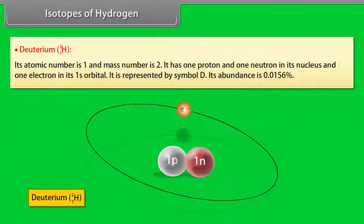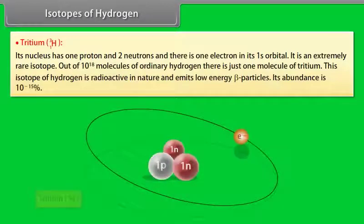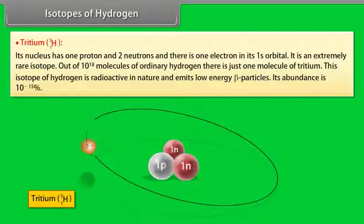Tritium: Its nucleus has one proton and two neutrons and there is one electron in its 1s orbital. It is an extremely rare isotope. Out of 10 to the power 18 molecules of ordinary hydrogen, there is just one molecule of tritium. This isotope of hydrogen is radioactive in nature and emits low-energy beta particles. Its abundance is 10 raised to the power minus 15%.